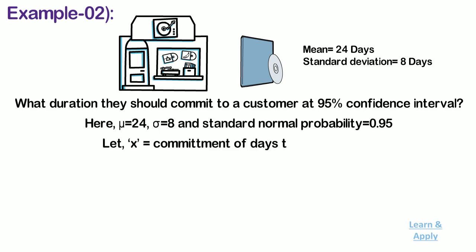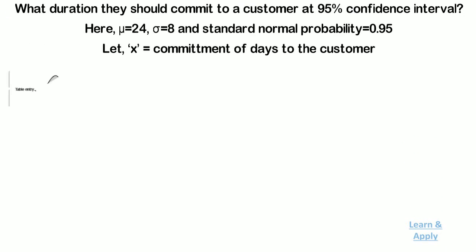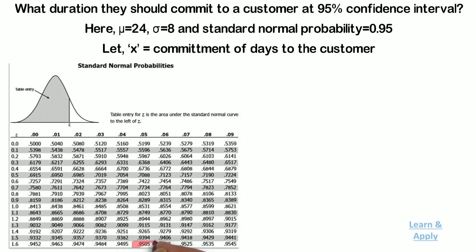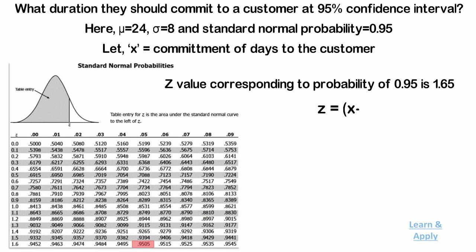Let's consider a commitment of x raised to the customer. From the table of standard normal probabilities, z value corresponding to probability of 0.95 is 1.65. Now, z equals x minus mu upon sigma. Therefore, x minus mu equals z times sigma. That is, x minus 24 equals 1.65 times 8, which equals 37.2.